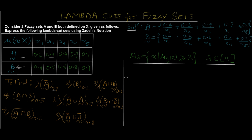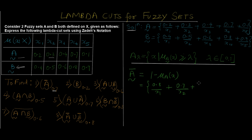To calculate A complement, the formula is 1 minus mu_A(x). So: 1 − 0.2 = 0.8/X1, 1 − 0.3 = 0.7/X2, 1 − 0.4 = 0.6/X3, 1 − 0.7 = 0.3/X4, and 1 − 0.1 = 0.9/X5. The denominator stays the same. This gives us the complement of fuzzy set A.